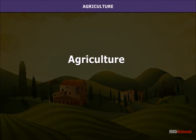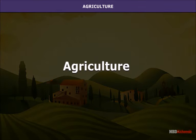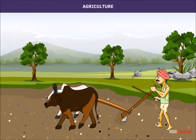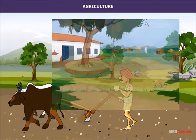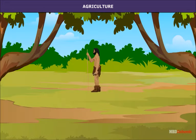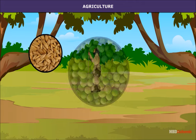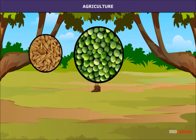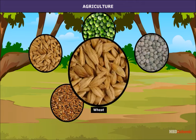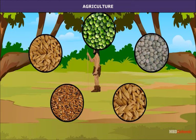Agriculture was the first occupation of man. Many towns, cities and civilizations grew around centers of agricultural production. Early people domesticated the wild variety of plants to grow food crops like barley, peas, lentils, flax and wheat. In the beginning, they did not practice settled agriculture.